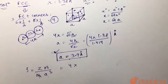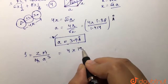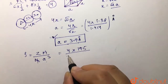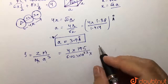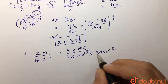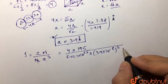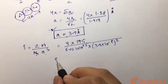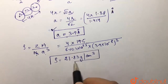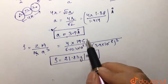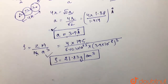Now substituting the values: Z = 4, M = 195 g/mol, Nₐ = 6.023 × 10²³, and a = 3.9 angstrom = 3.9 × 10⁻⁸ cm. We calculate a³ and plug everything in. Solving gives a density of 21.83 g/cm³. The units are grams per centimeter cubed because M is in grams and a is converted to centimeters.